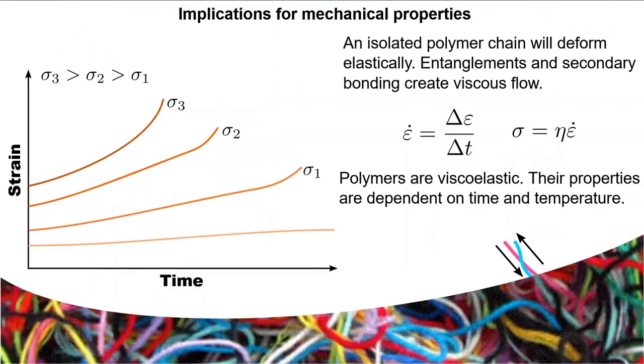The net effect of secondary bonding is that beyond mechanical entanglements, there are additional forces acting between polymer chains. If one were to take a single polymer chain and pull it, then it would deform elastically when drawn taut.